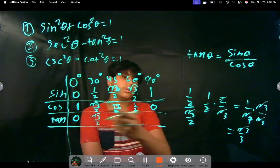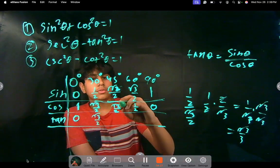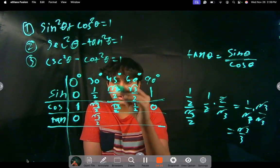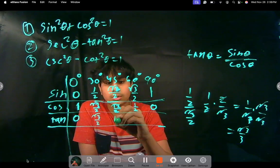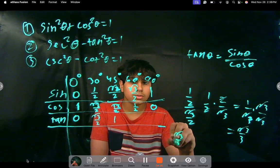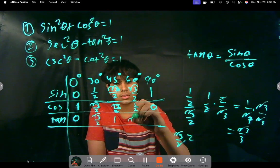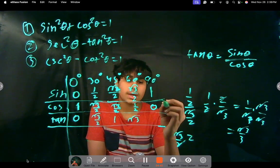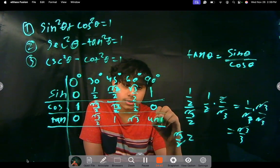So like that, you could go through all of these. If you do root 2 over 2 over root 2 over 2, it's going to be equal to 1. If you do root 3 over 2 times 2, it's going to just be root 3. And then 1 over 0, you can't do that. So this one's going to be undefined.